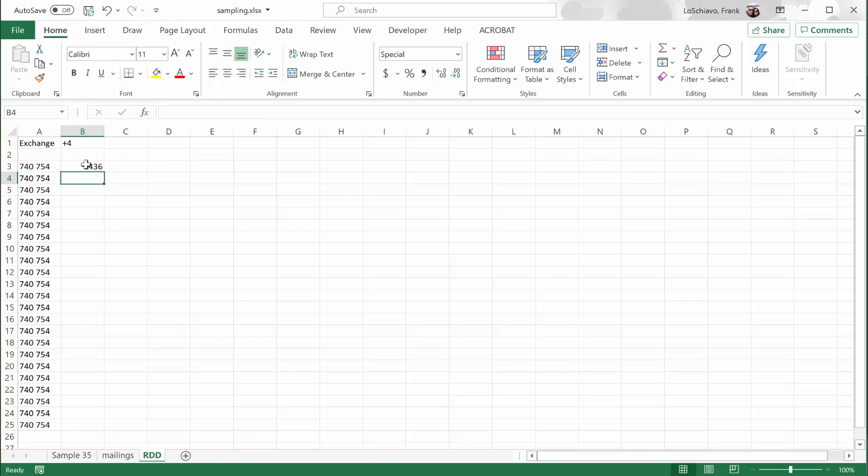Now, of course, we're going to need several numbers to select from so I can copy that all the way down. So again, this is just one method that we could use to obtain some random telephone numbers that we could then call when using random digit dialing.